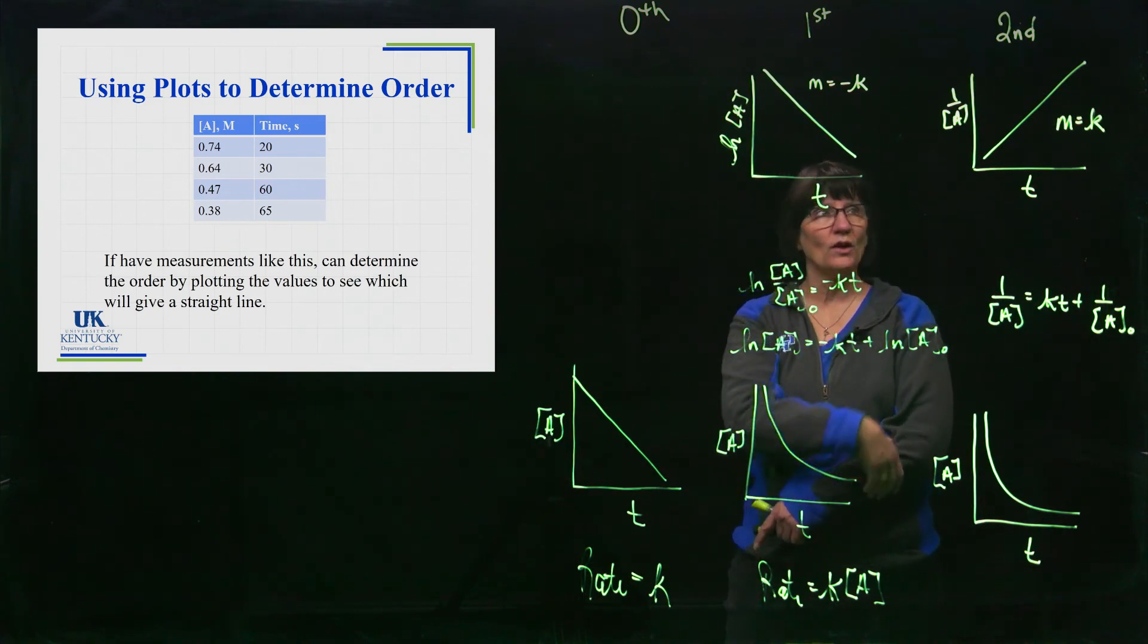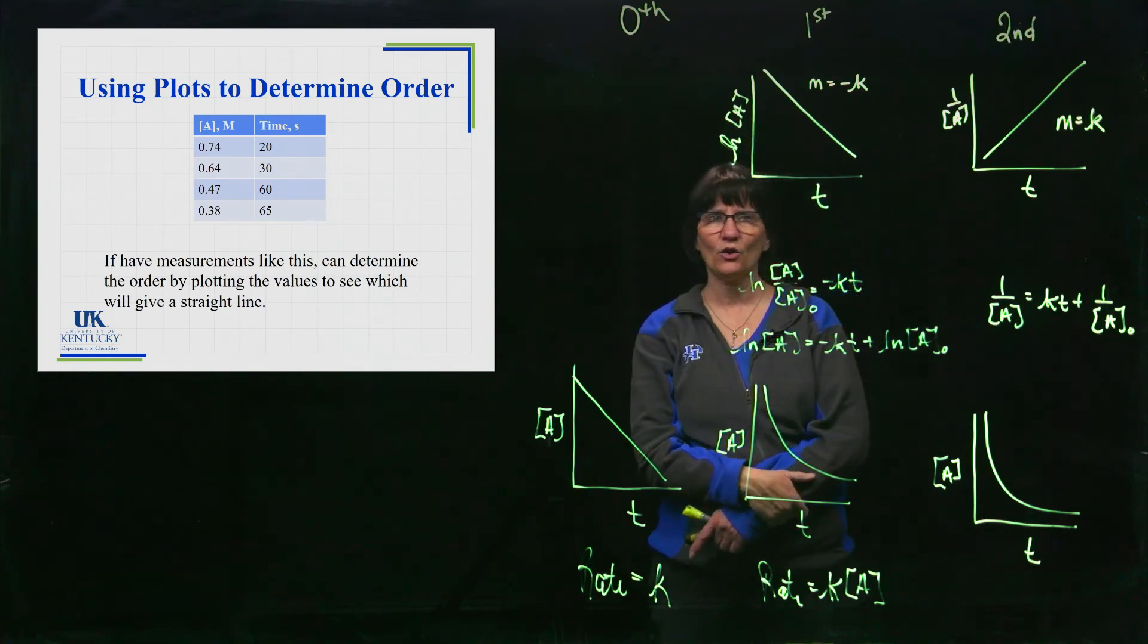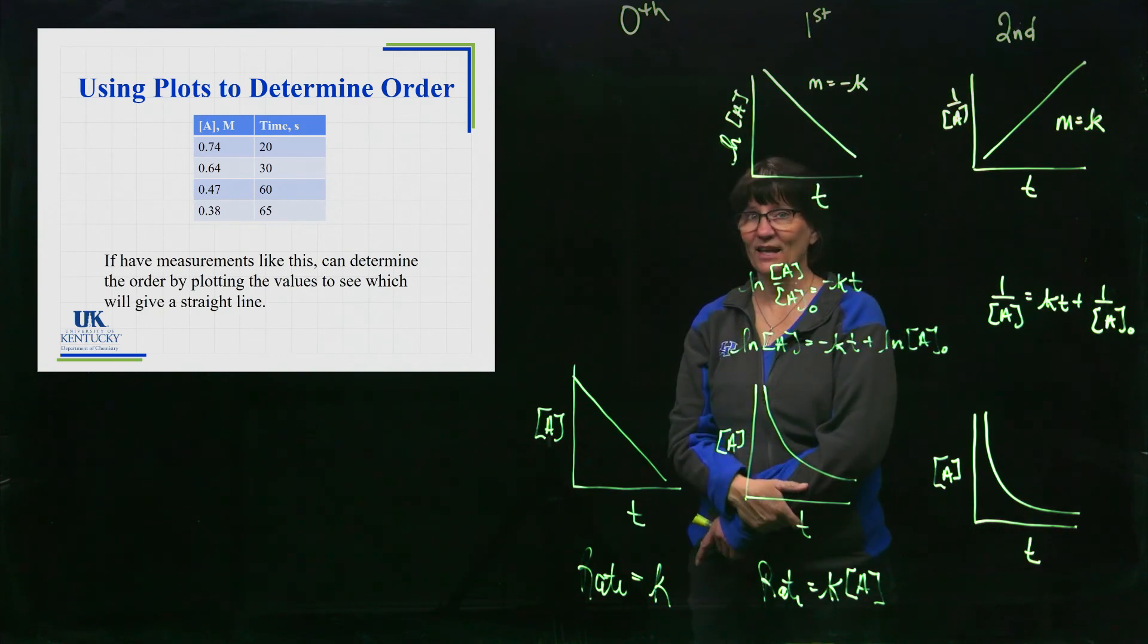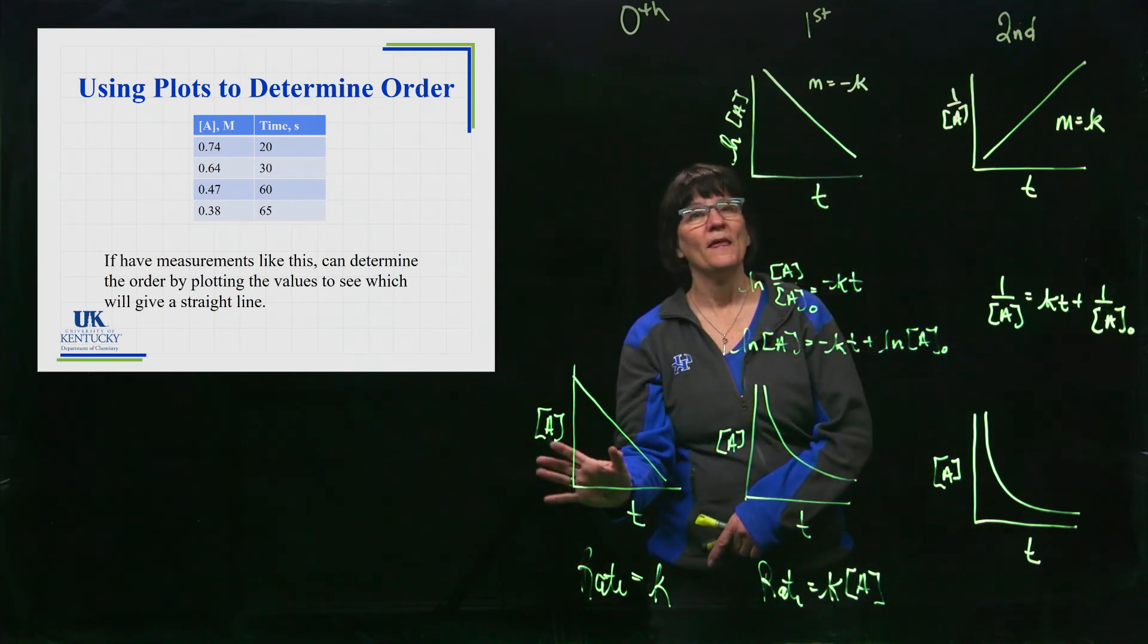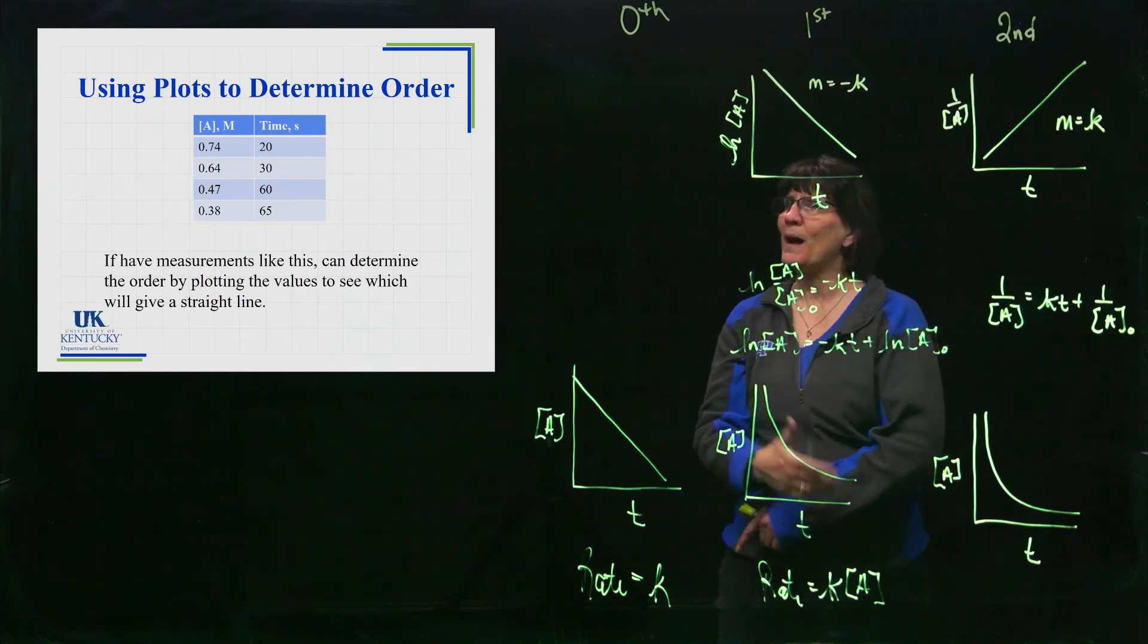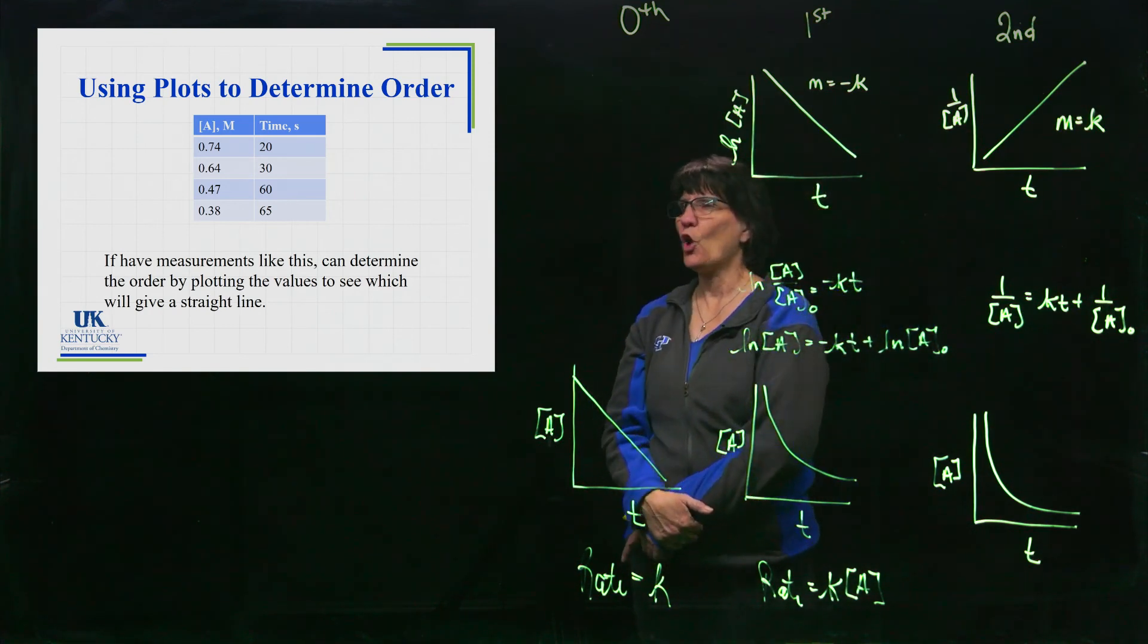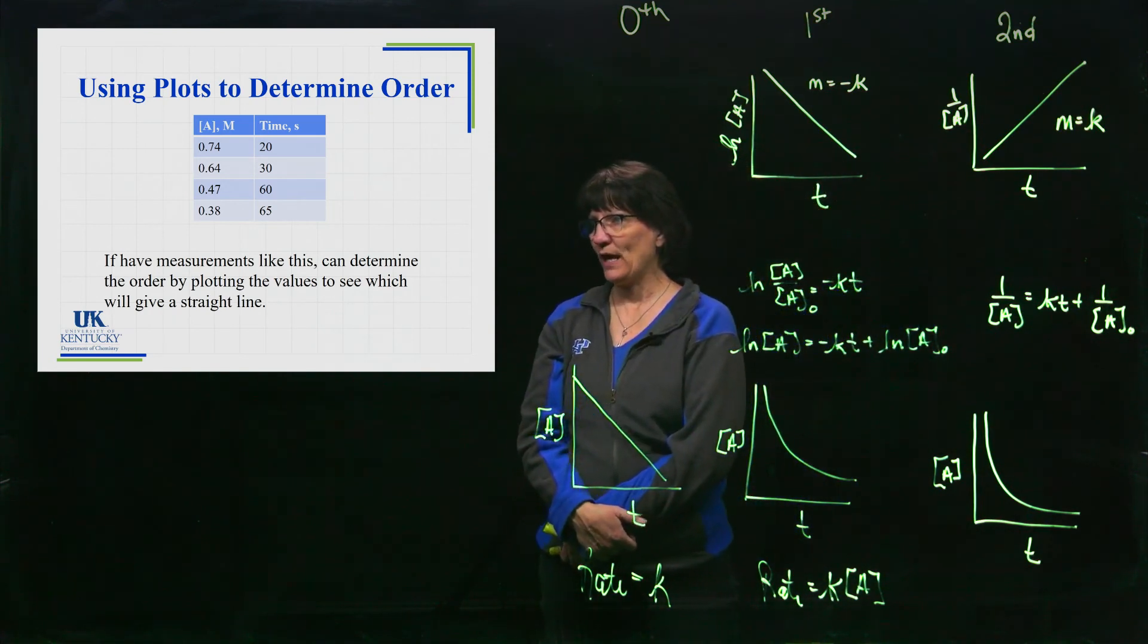And if that is a straight line, aha, we have discovered it's second order. If it's not a straight line, we've just discovered it's not second order. So you can only know is it zero, first, or second, but by which one of these is going to give you a straight line.